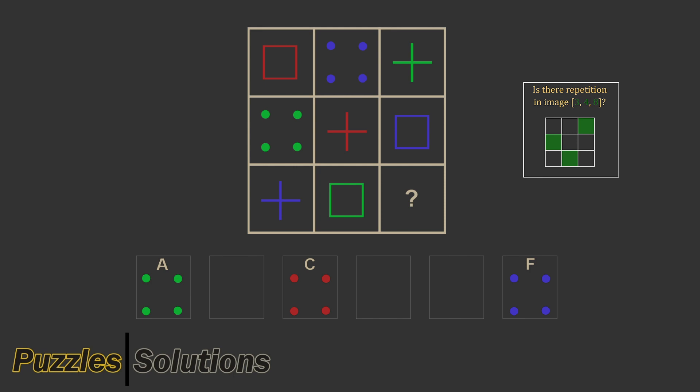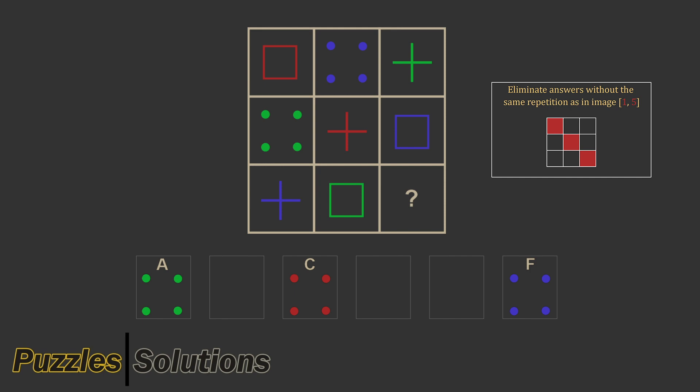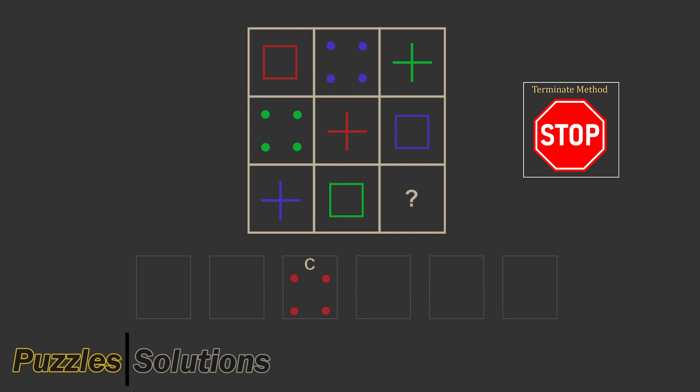Now we check the top left to bottom right diagonals. Is there any repetition in image 348? Yes, we have repetition of green, so the type is repetition of color. Do we also have repetition of color in image 267? Yes, repetition of blue. And in image 1 and 5? Yes, repetition of red — so we eliminate any answer that's not red. We only have one answer left, so we know that answer C is correct.